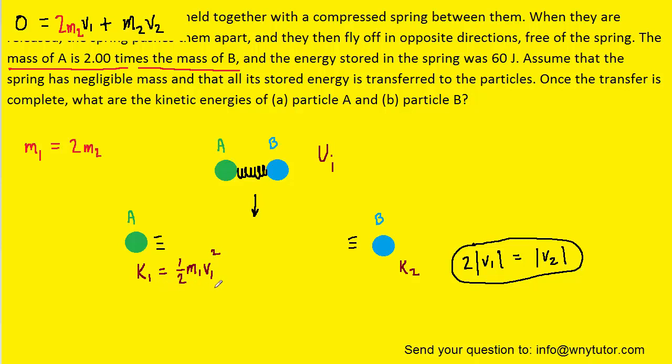Now we're going to try to get this in terms of k2. To do that we're going to once again recall that the mass of object 1 or particle A was equal to twice m2, so we're going to substitute that in right here.